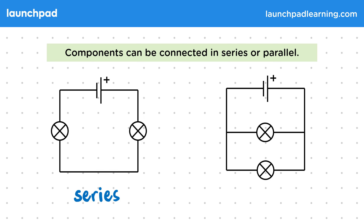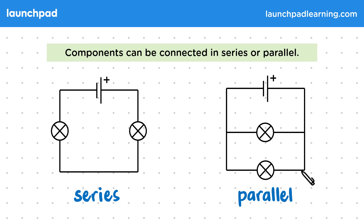When we say components are connected in parallel, we mean that they are on separate branches and no path around the circuit goes through both. So here, to get from one end of the cell to the other, the electric current can either pass through the lamp in the middle or at the bottom, but not both. So this means the lamps are in parallel.